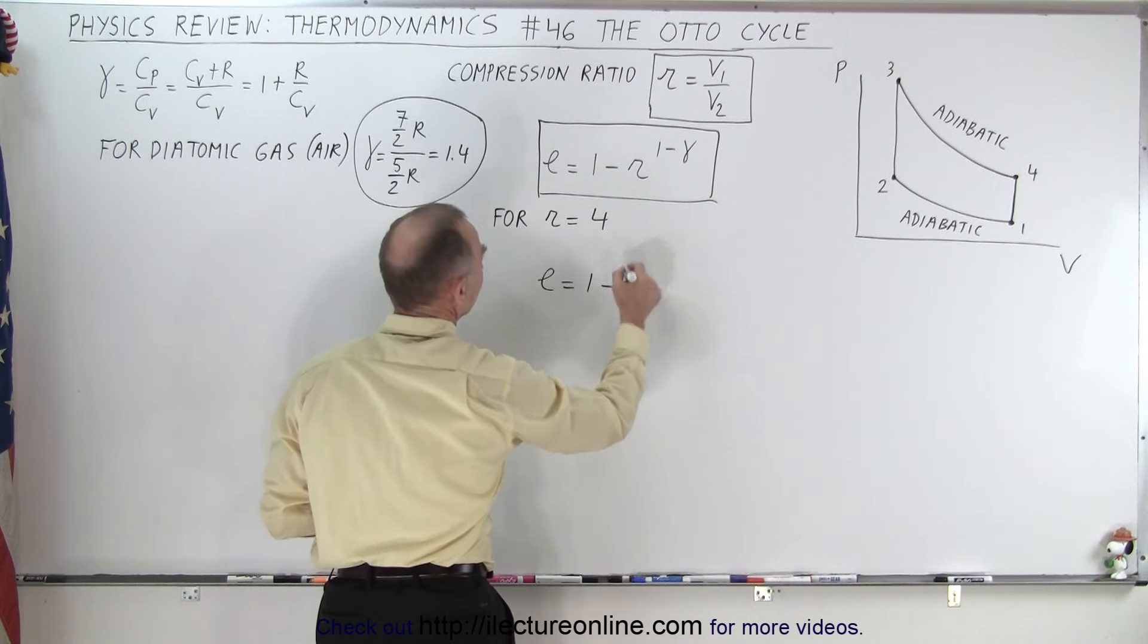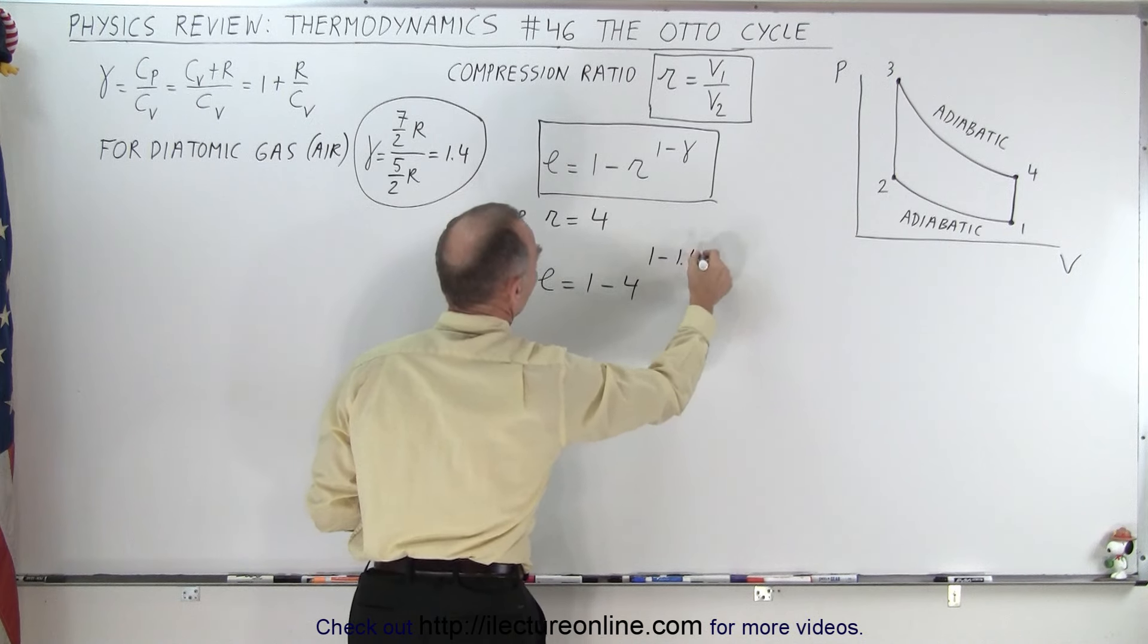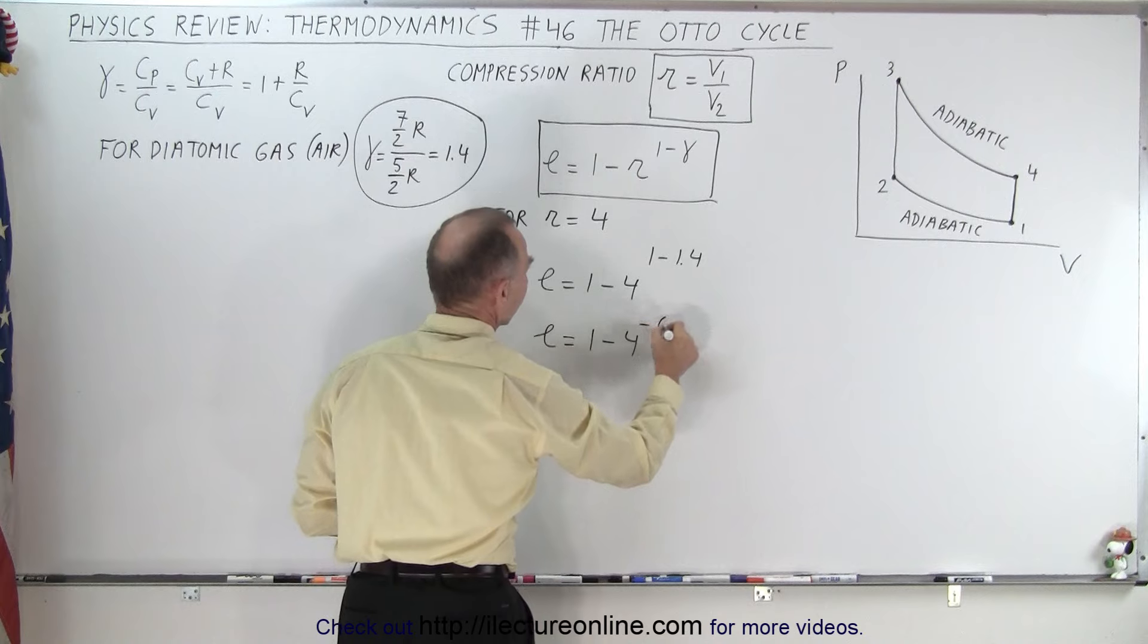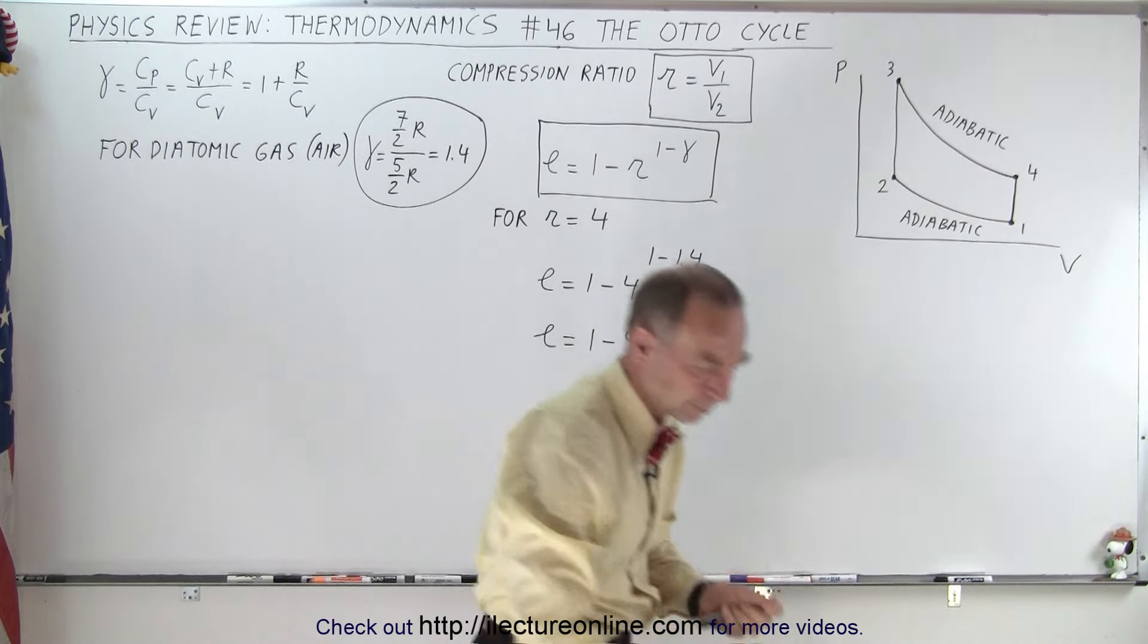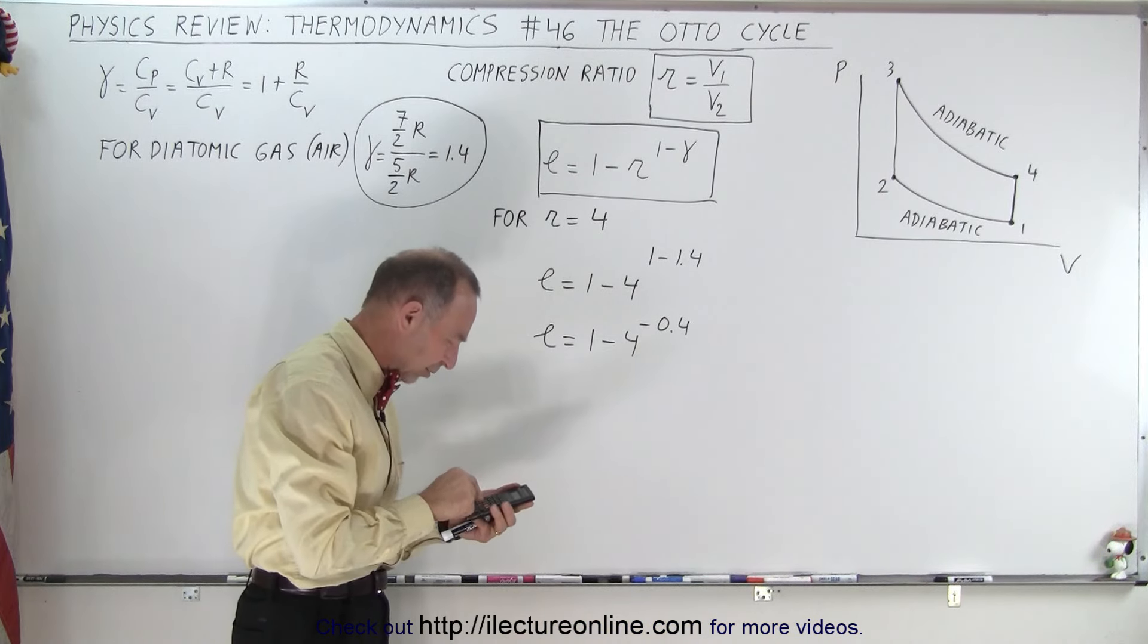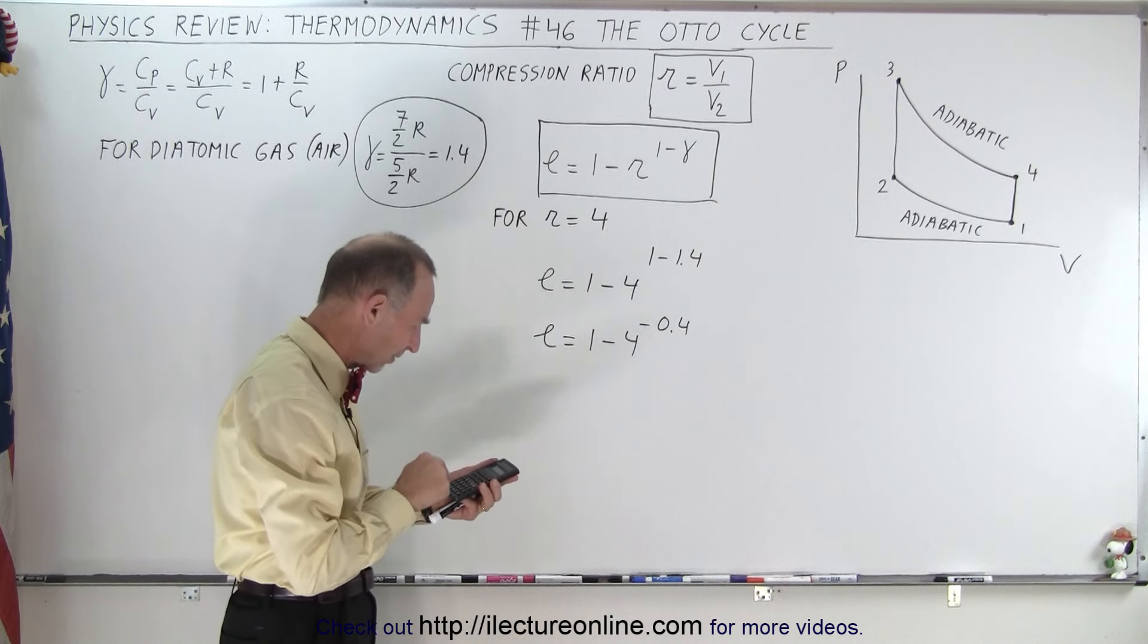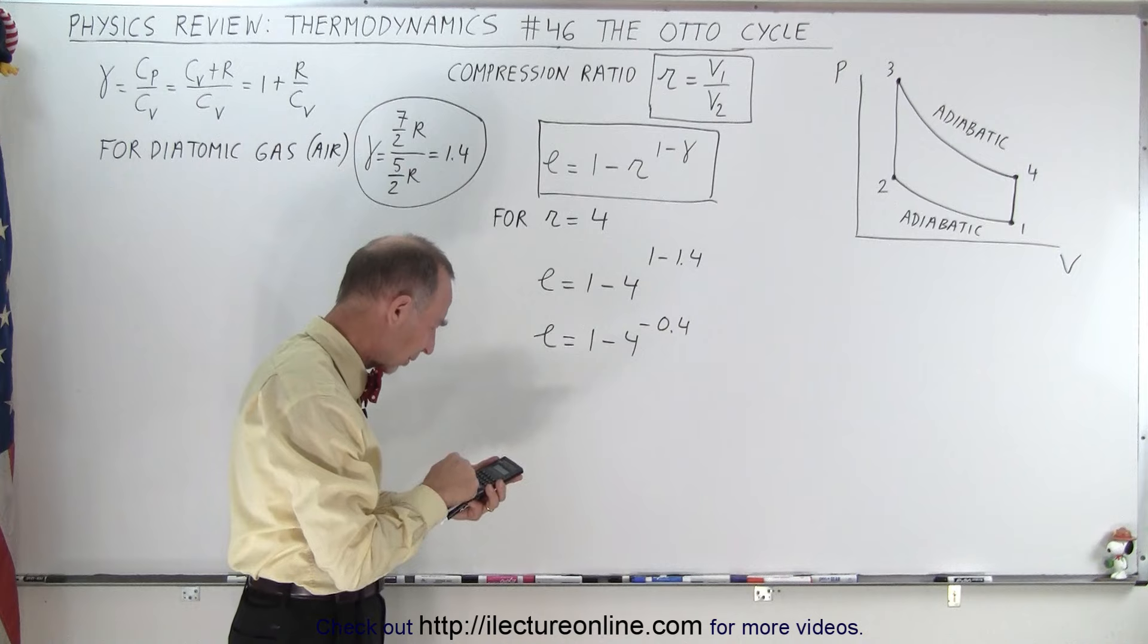e is equal to 1 minus r, which is 4, to the 1 minus 1.4. So we have e is equal to 1 minus 4 to the negative 0.4. At this point we need a calculator. So we have 4 raised to the 0.4, minus, equals, and then subtract that from 1.